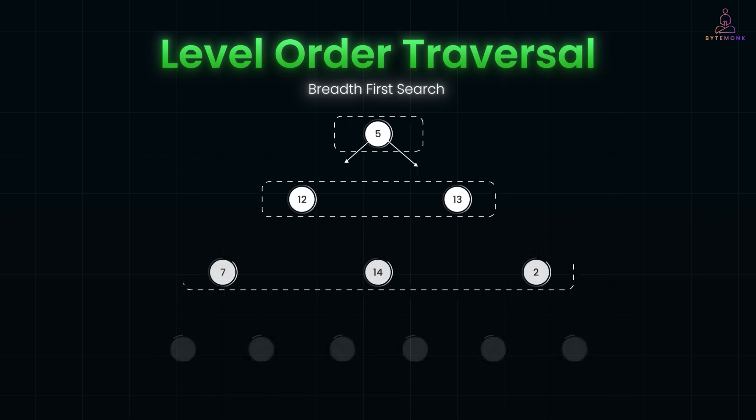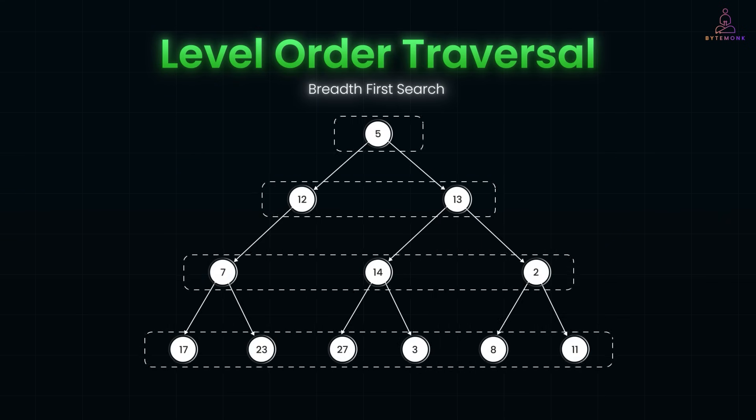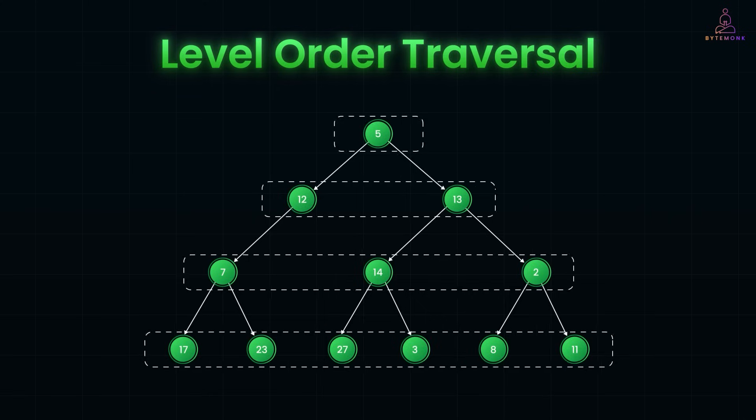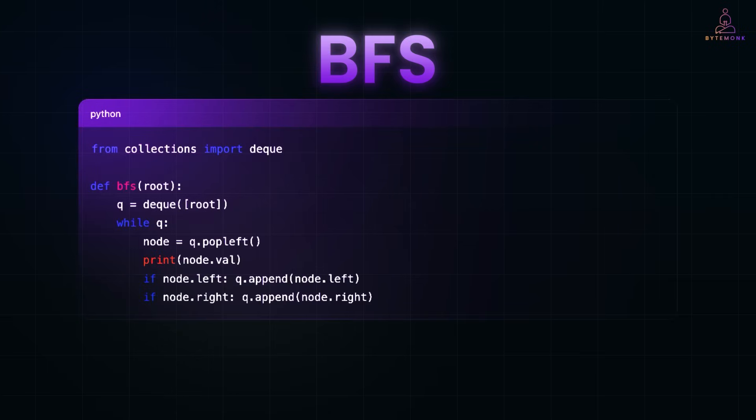The breadth-first search or level-order traversal is a bit different. It explores level by level, starting at the root, then its children, then their children, and so on. Imagine a queue at a theme park. You visit nodes in the order they arrive. And here is a simple BFS using a queue in Python.